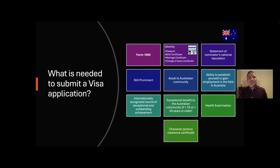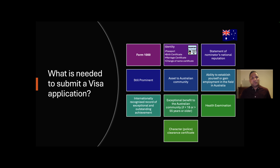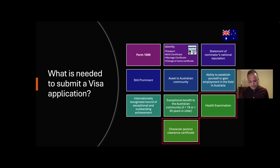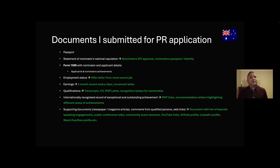Most of the documents are similar to what we already submitted during the expression of interest, which includes Form 1000, the statement of the nominator's national reputation — is the nominator still prominent? — how we can be an asset to the Australian community, ability to establish by means of gaining employment in Australia, international recognition, and various other things. Apart from those EOI documents, for identity we need the birth certificate, marriage certificate, change of name certificate if applicable, and two most important things: the health examination and the character clearance certificate or Police Certificate — PCC.